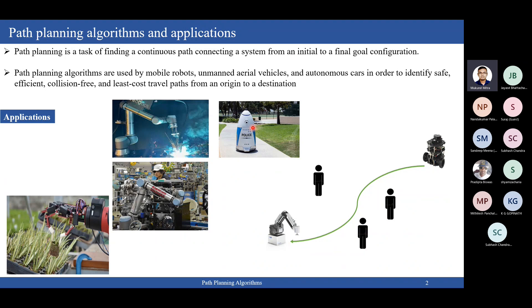The main consideration in path planning is that the path generated must be collision-free, and also it should be efficient in terms of cost, distance, time, and other factors. Efficiency is not only in terms of distance and time, but safety is also one consideration. When the robot moves from one place to another, it should not only avoid humans but also make sure that humans feel safe while the robot is crossing them.